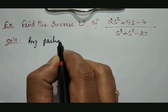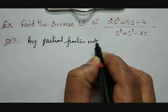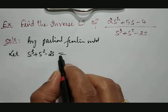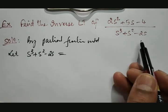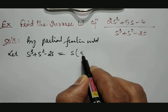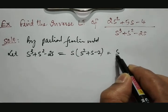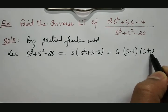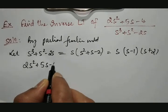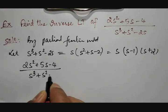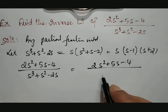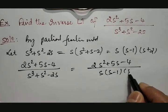By partial fraction method, let us consider the denominator s³ + s² - 2s. First, I will simplify this by factorization. Taking s common, it becomes s(s² + s - 2), which is nothing but s(s - 1)(s + 2). Therefore, the given expression 2s² + 5s - 4 divided by s³ + s² - 2s becomes 2s² + 5s - 4 divided by s(s - 1)(s + 2).